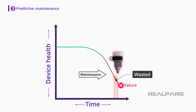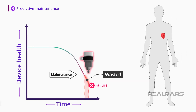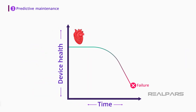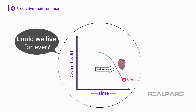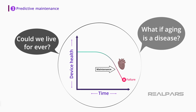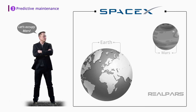It may be off topic, but as I was working on this video, I had some interesting thoughts. What if we could apply the concept of predictive maintenance to human body organs? What if we could replace a heart before it fails — could we then live forever? What if aging is a disease? Consider how the world would change if we could live forever. The plan that Elon Musk and SpaceX have started for making humans multi-planetary seems in line with living a considerably longer life. Let me know in the comments what you think of this.